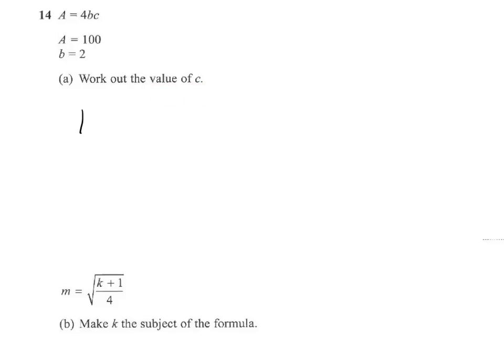So we know then that 100 is a, 100 will equal 4 times b, which is 2 times c. So that gives me 100 equals 8c, so 100 divided by 8 equals c.